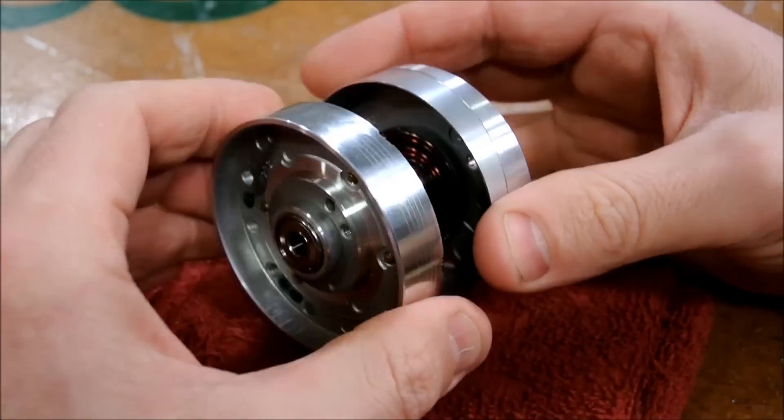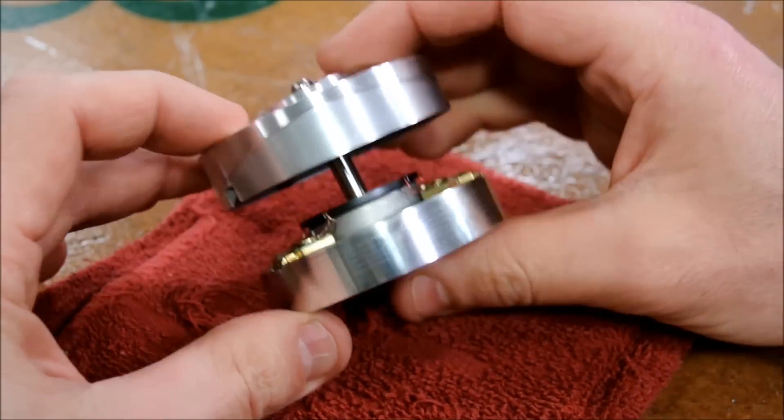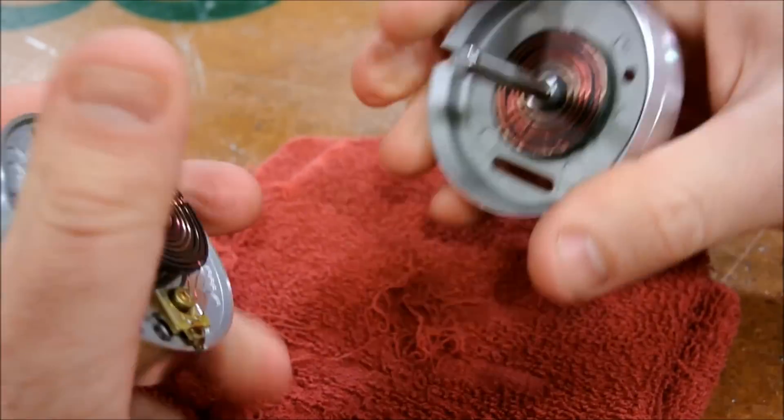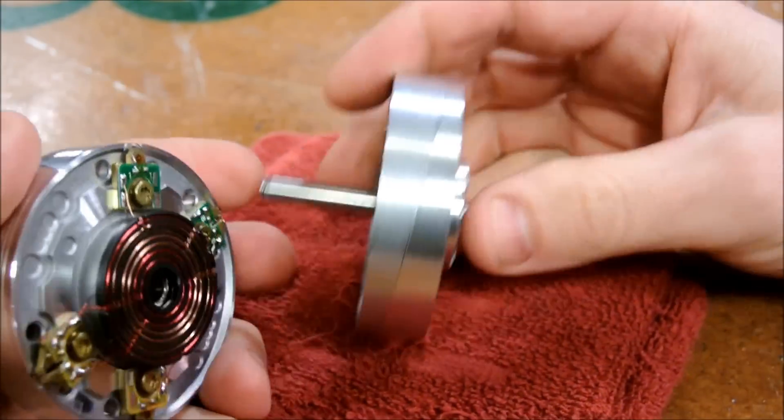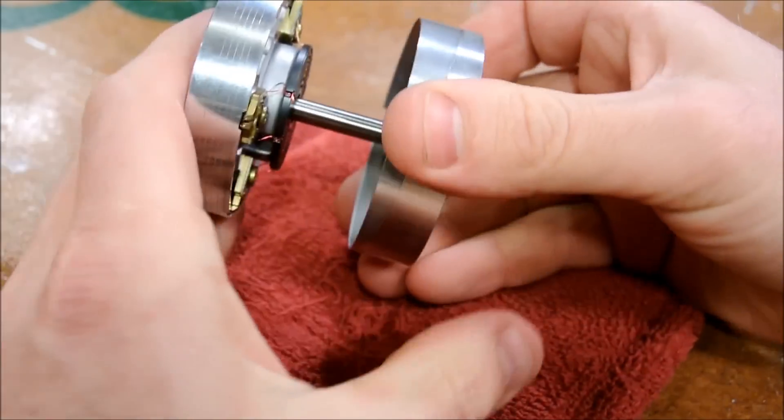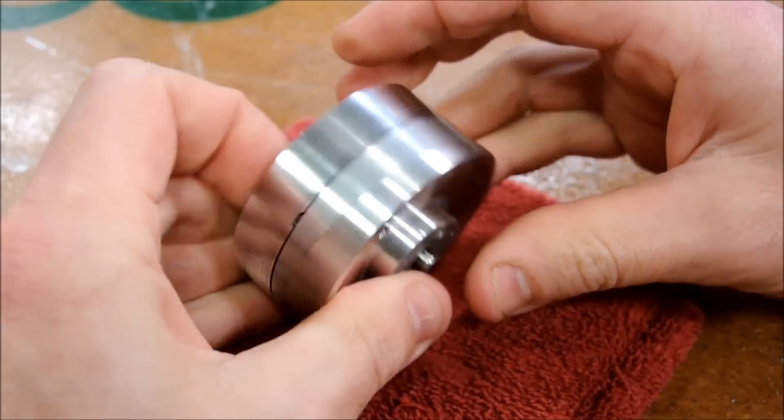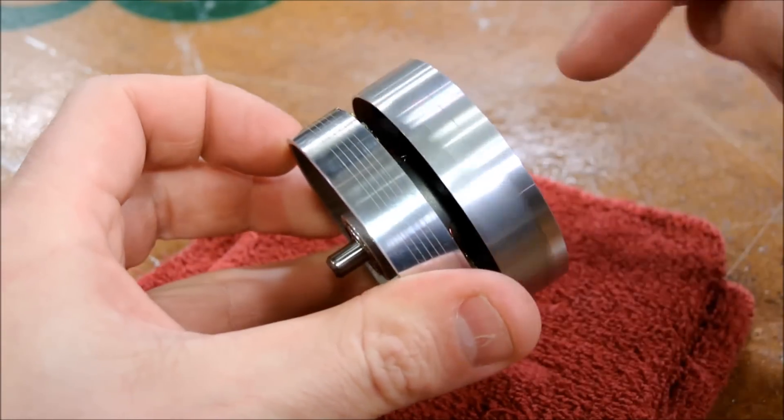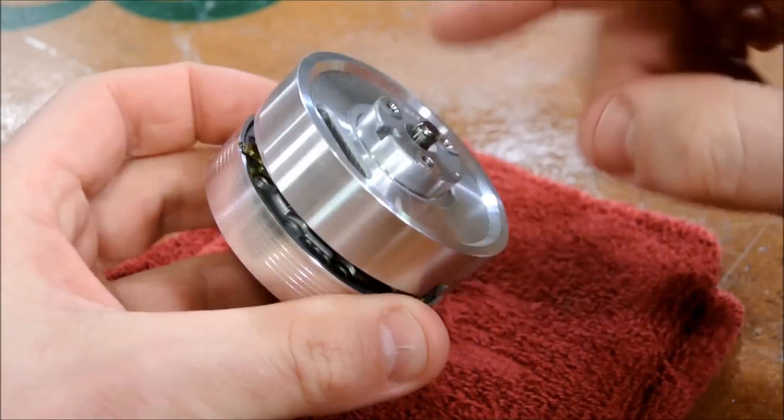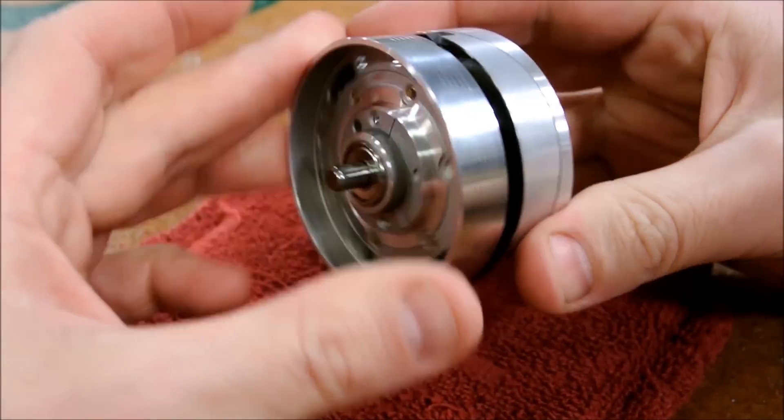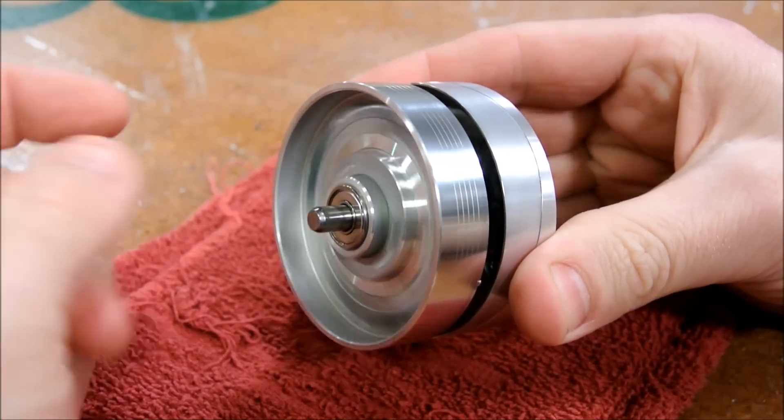So what we're looking at here is a very precision-made bearing assembly. And it has a post that goes through the center of the bearings that functions as an axle. It is stationary. The axle is stationary on this side, and so the bearings are free to spin about it.